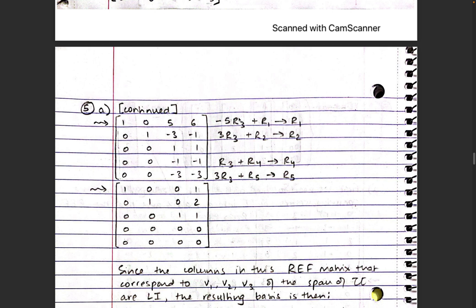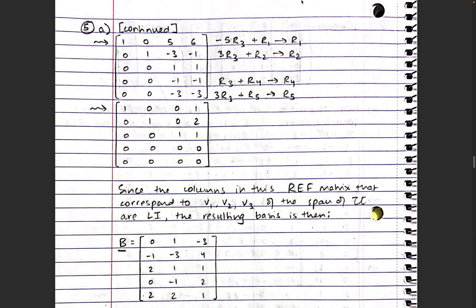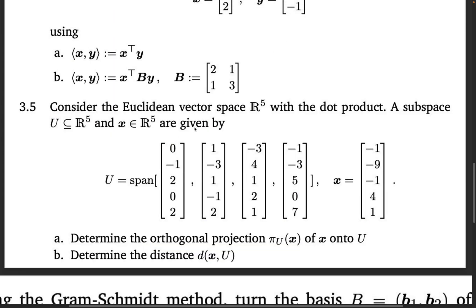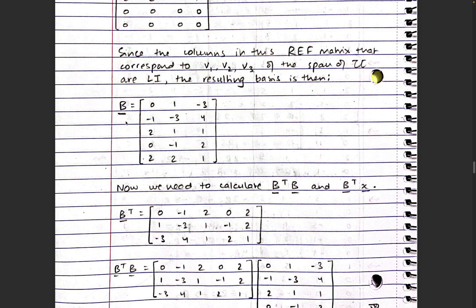We use that third row, using multiples of it and adding to the first, second, fourth, and fifth rows. We perform all those calculations, and now we end up with this row echelon form matrix. We find that the first, second, and third columns of this matrix are linearly independent. The fourth column is not linearly independent — it is linearly dependent on the other rows because it does not have a pivot. So the vectors corresponding to the first, second, and third columns form the basis of U. We write this out neatly and label it as matrix B.